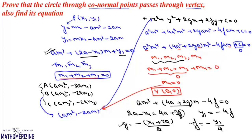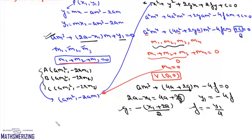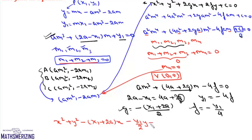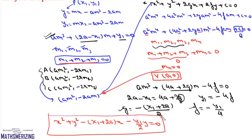Now we have g, f, and c, so we can write the equation of the circle. The equation of the circle passing through the three conormal points is x² + y² − (x1 + 2a)x − (y1/2)y = 0.